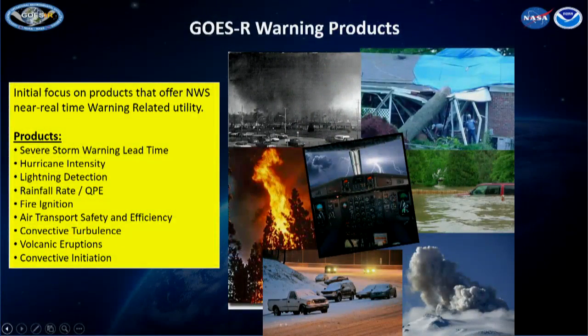What kind of warning products can we make using lightning? Severe storm warning lead time — total lightning gives us an indication of storm updraft intensity and how it is intensifying with time, making warnings more accurate and reducing false alarms compared to Doppler radar alone. We can increase lead time using a phenomenon we call the 'lightning jump' — a rapid change in the total flash rate. For hurricane intensity, the absence or presence of lightning in the rain bands and eye wall can indicate strong vertical shear, which is an enemy of hurricane intensification. Also useful: in-cloud lightning detection before the first cloud-to-ground, rainfall rate monitoring, fire ignition risk, and air transport safety.